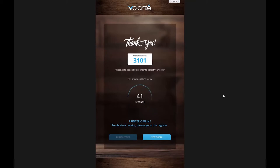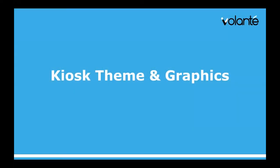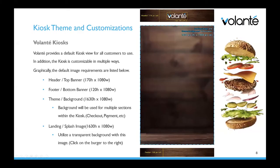We're going to hop into the back office now to look at how we set up the imagery that goes along with our kiosk — the graphics for items and categories. But first I want to review image standards and best practices. The header logo, footer, banners at the top and bottom, the background, and the burger image are all pieces that can be changed out with images you provide to our teams in order to update to your brand standards. There are different size requirements for each.